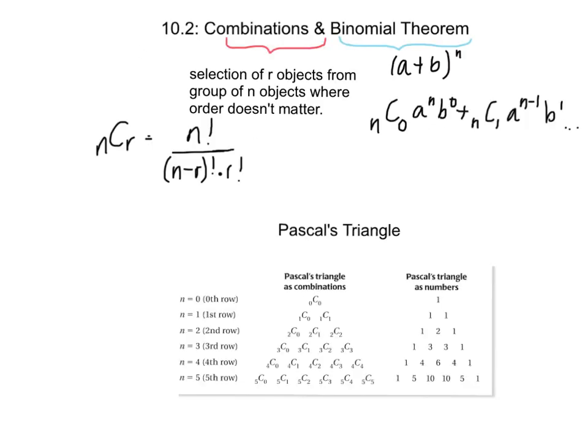So, the second section of chapter 10 is combinations and the binomial theorem. Combinations are similar to permutations, except that the order does not matter. We have a selection of R objects from a group of N objects, and when finding out how many different ways we can combine these, we're not going to worry about the order.